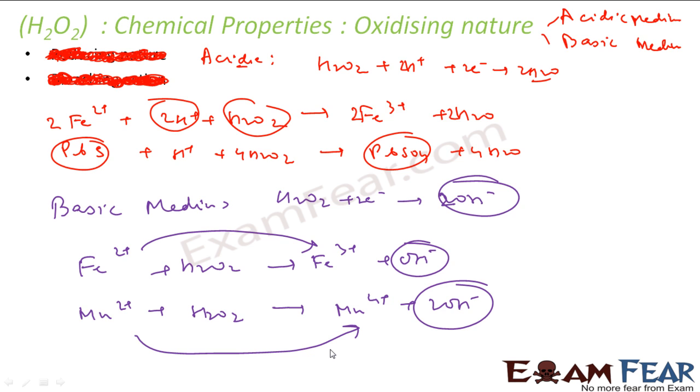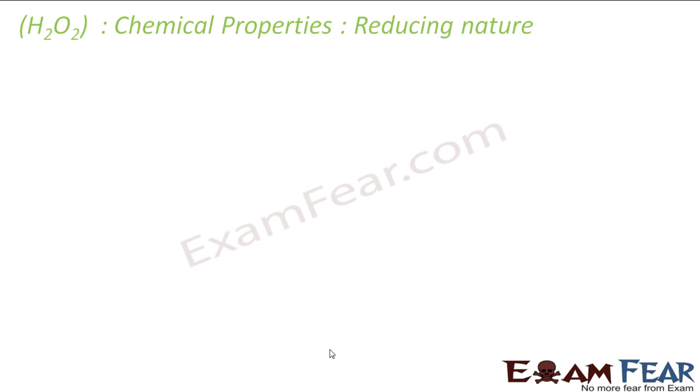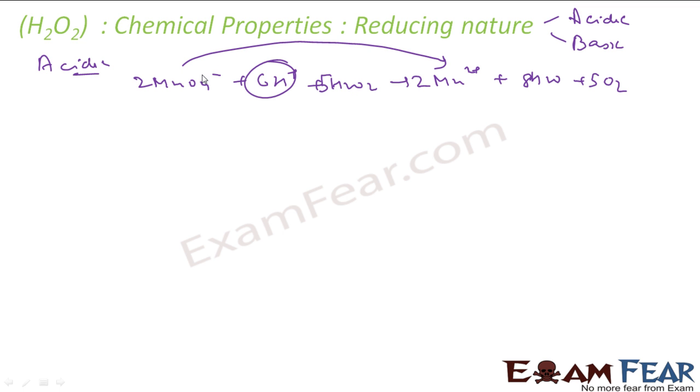As I told, it has reducing property both in acidic and basic medium. Let's check acidic first. MnO4- which is acidic will give Mn2+ plus H2O. This is my balanced reaction. Here also you can see this acidic medium and it is getting reduced, from plus 7 to plus 2, getting reduced.